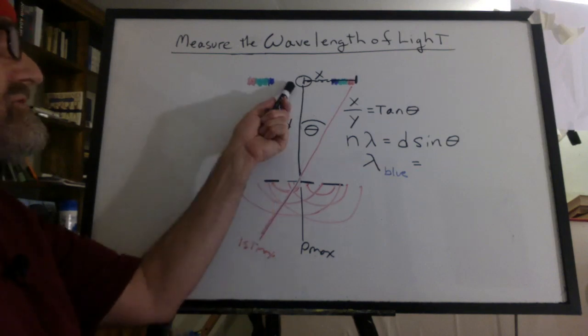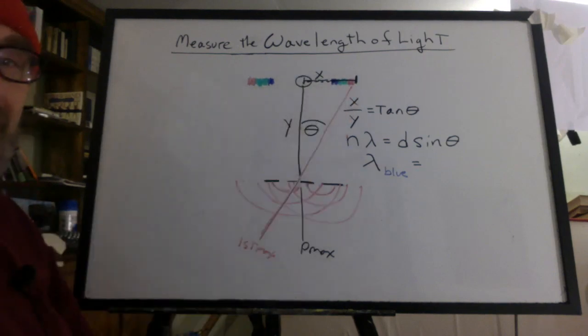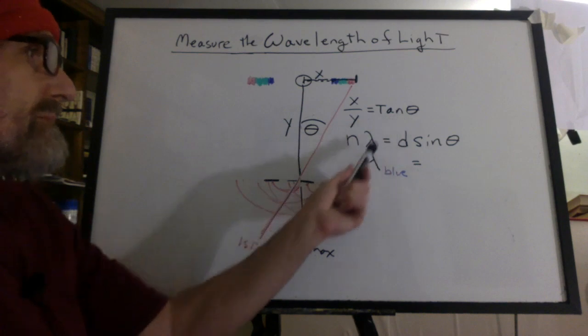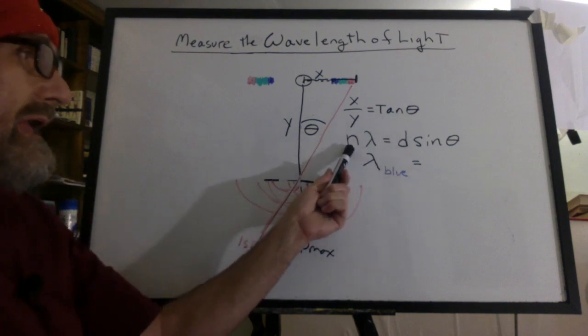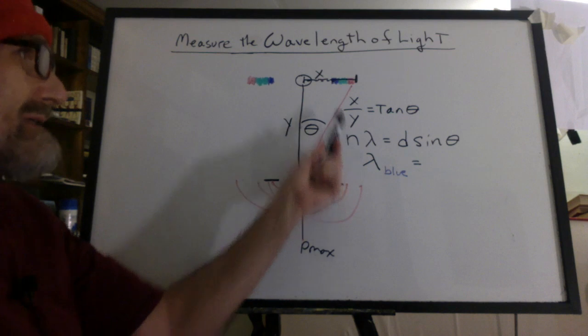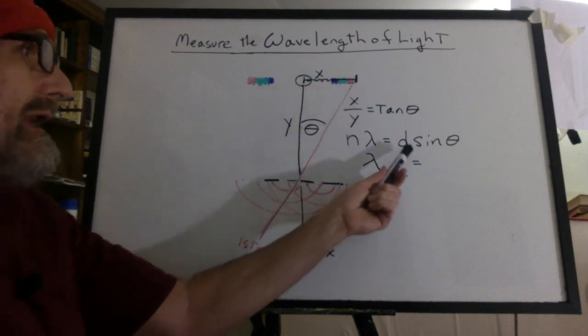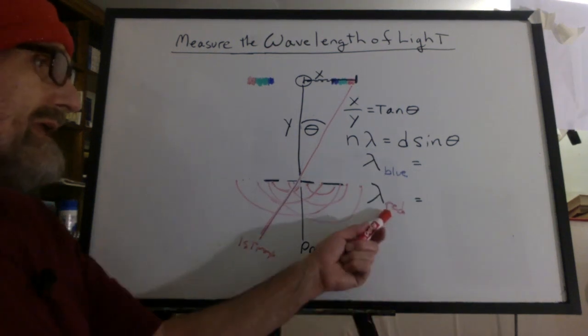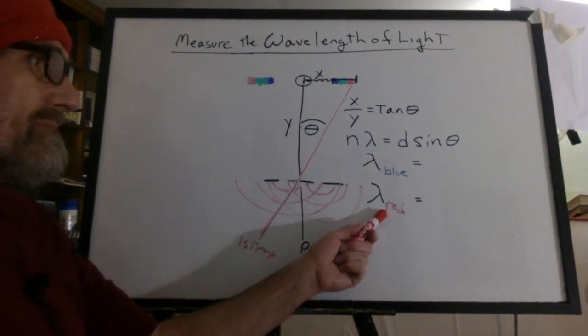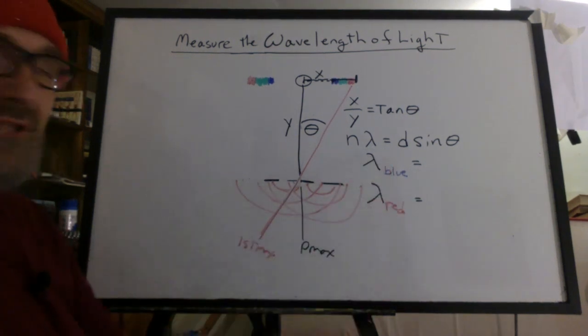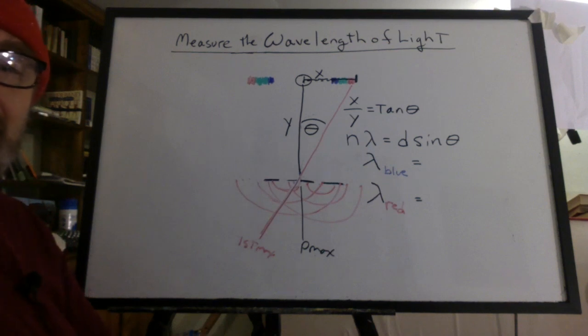Now we have to measure that angle. Y hasn't changed, but X will now be a little bigger. So you're going to have a new angle. You're going to still have N equal to one because we're at the first maximum for red light. And D is still going to be the same as before. And you'll be able to calculate the wavelength of red light. Well, then, of course, you could look these up and check them from a spectrum that's published.